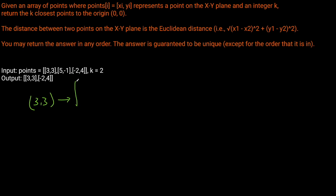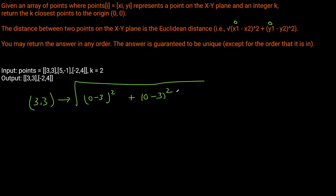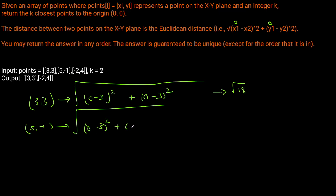Remember that our formula is going to be the square root of x1 squared plus y1 squared, since x2 and y2 are the origin (0, 0). So we can say 0 minus 3 squared plus 0 minus 3 squared, which gives us the square root of 18. For the point (5, -1), we get 0 minus 5 squared plus 0 minus (-1) squared, which equals 25 plus 1, so root 26.